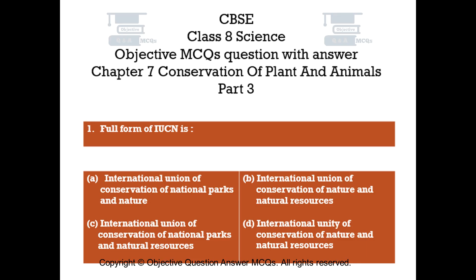Question number 1. Full form of IUCN is: Option A - International Union of Conservation of National Parks and Nature. Option B - International Union of Conservation of Nature and Natural Resources. Option C - International Union of Conservation of National Parks and Natural Resources. Option D - International Unity of Conservation of Nature and Natural Resources.